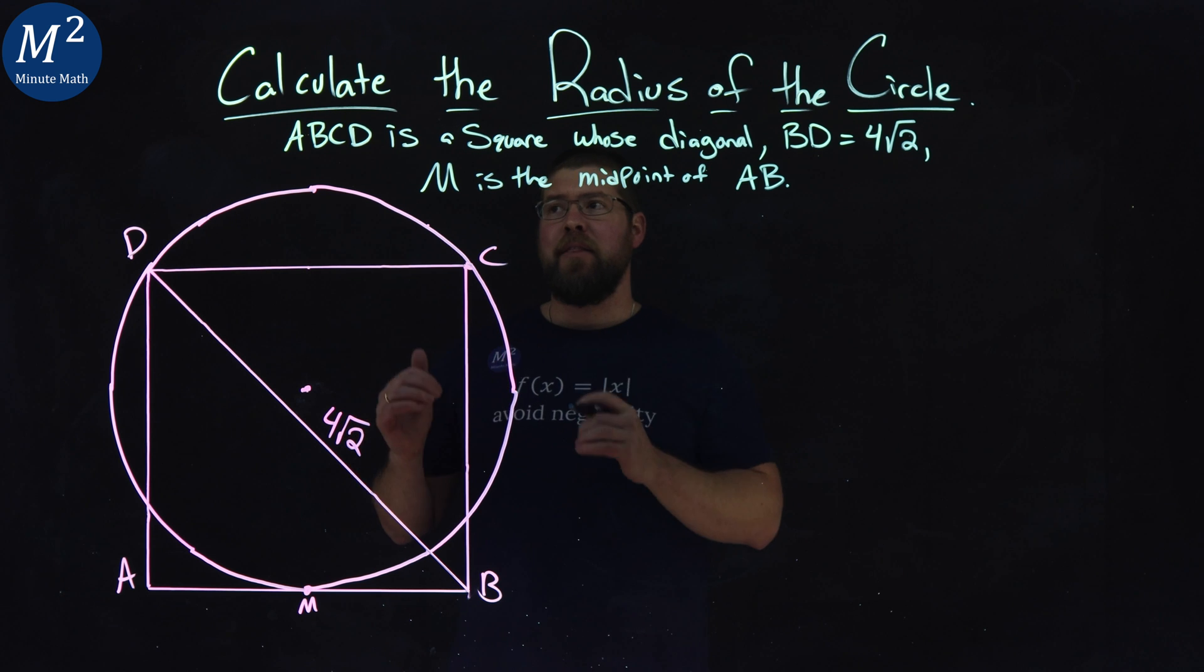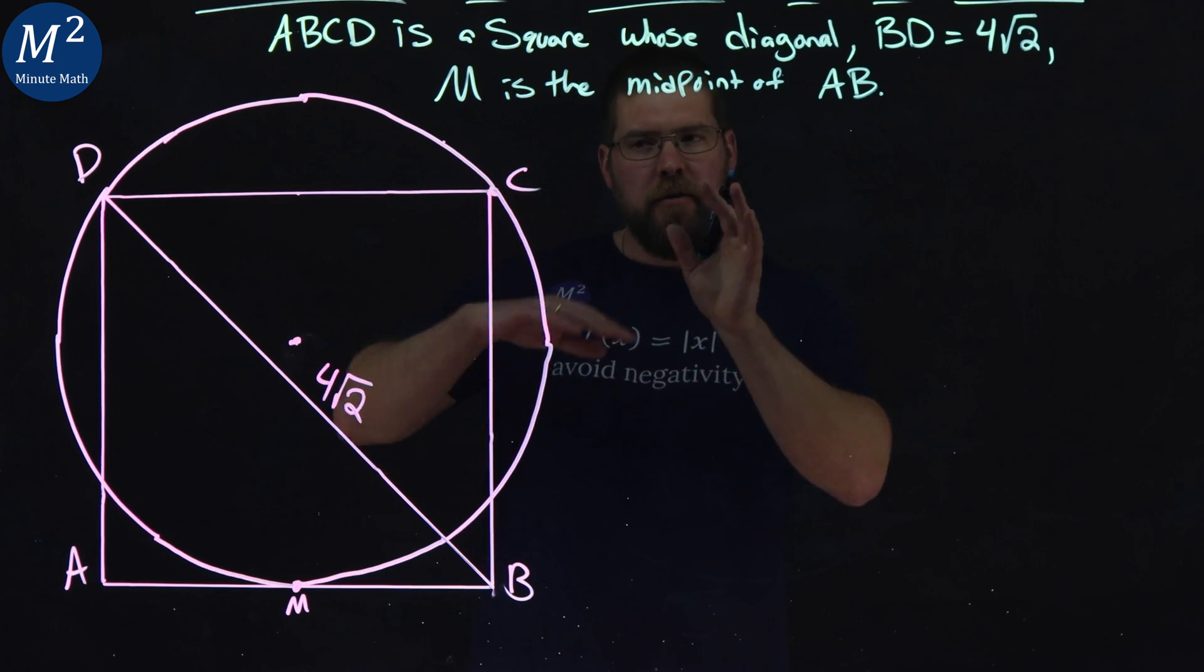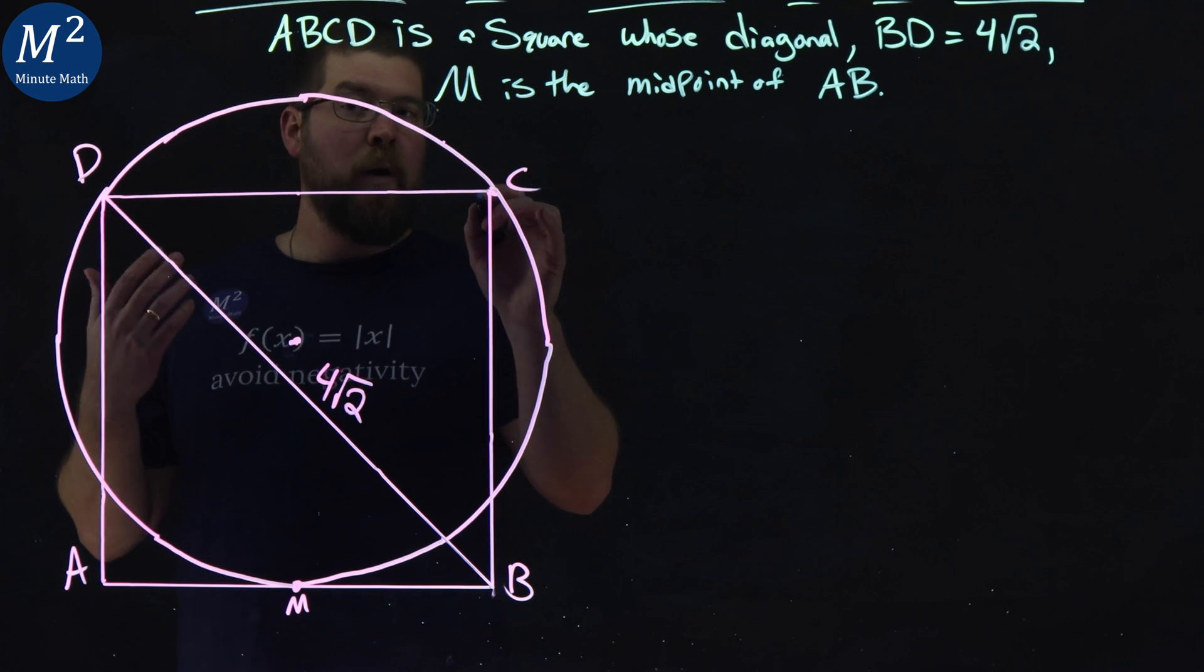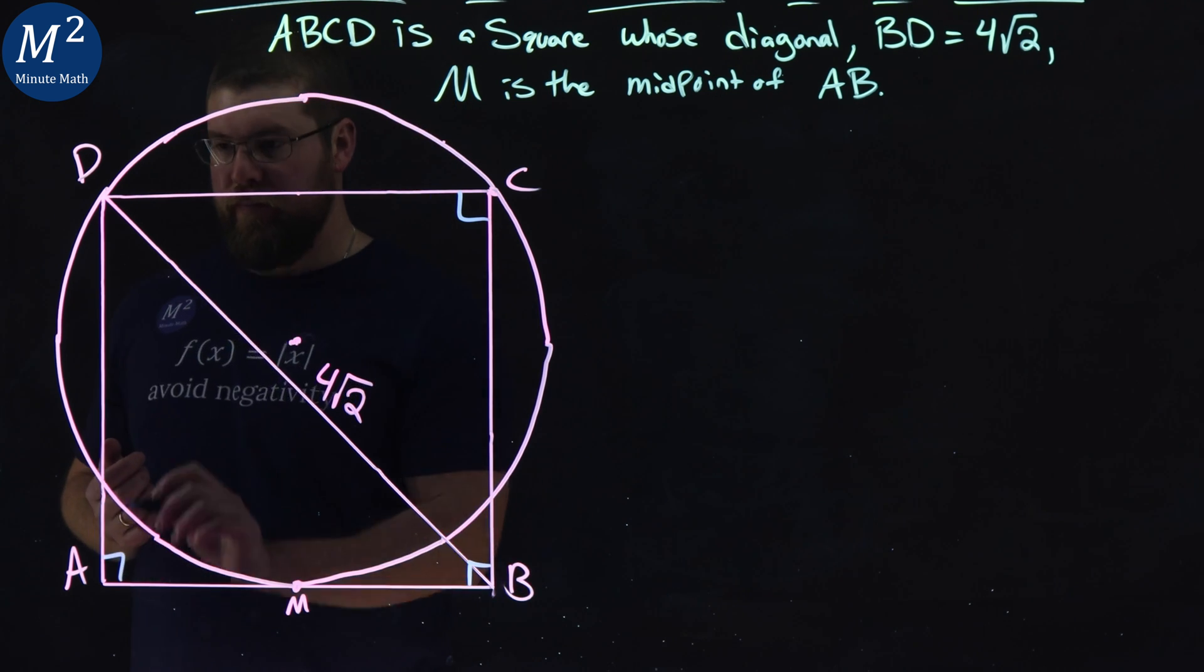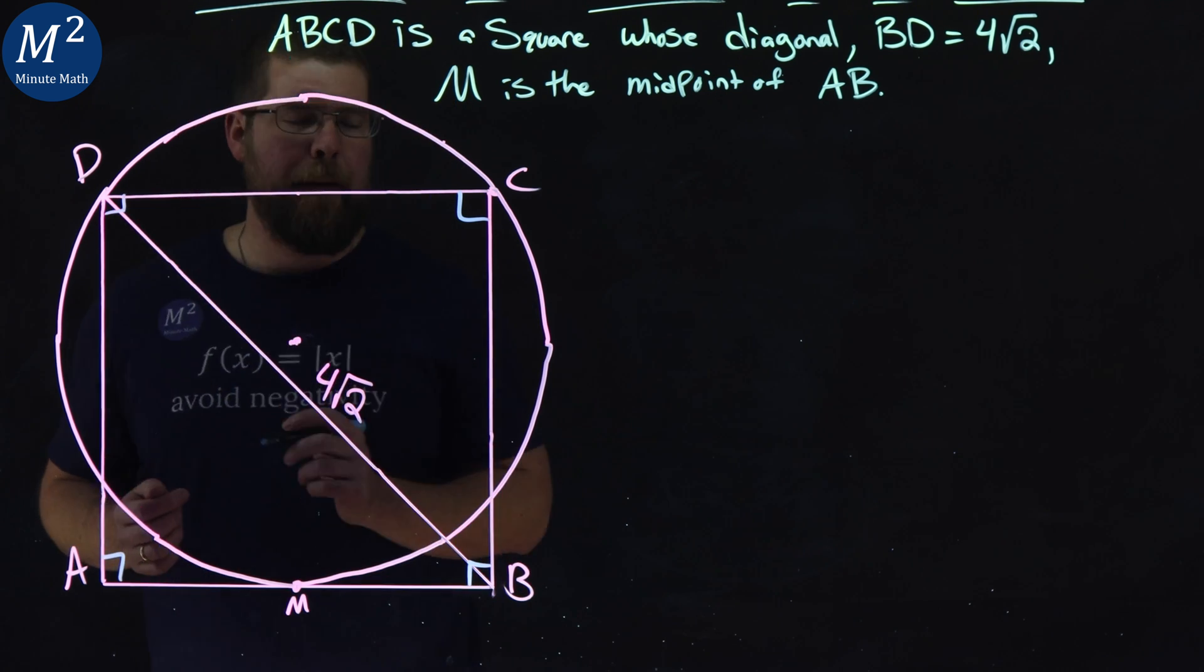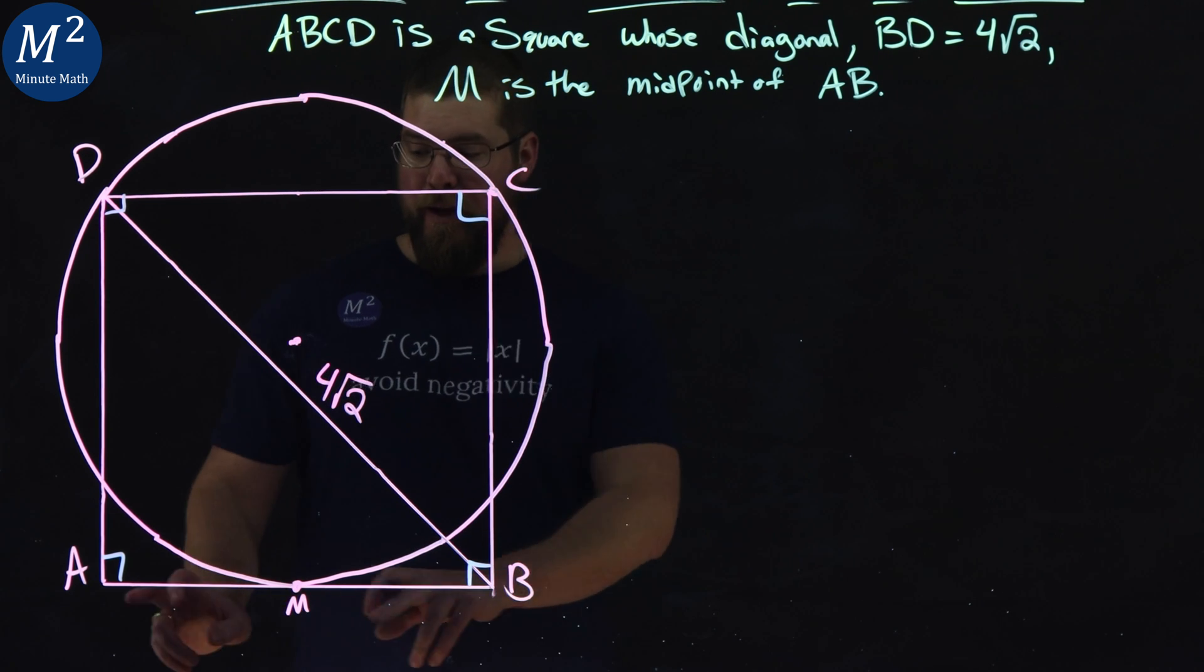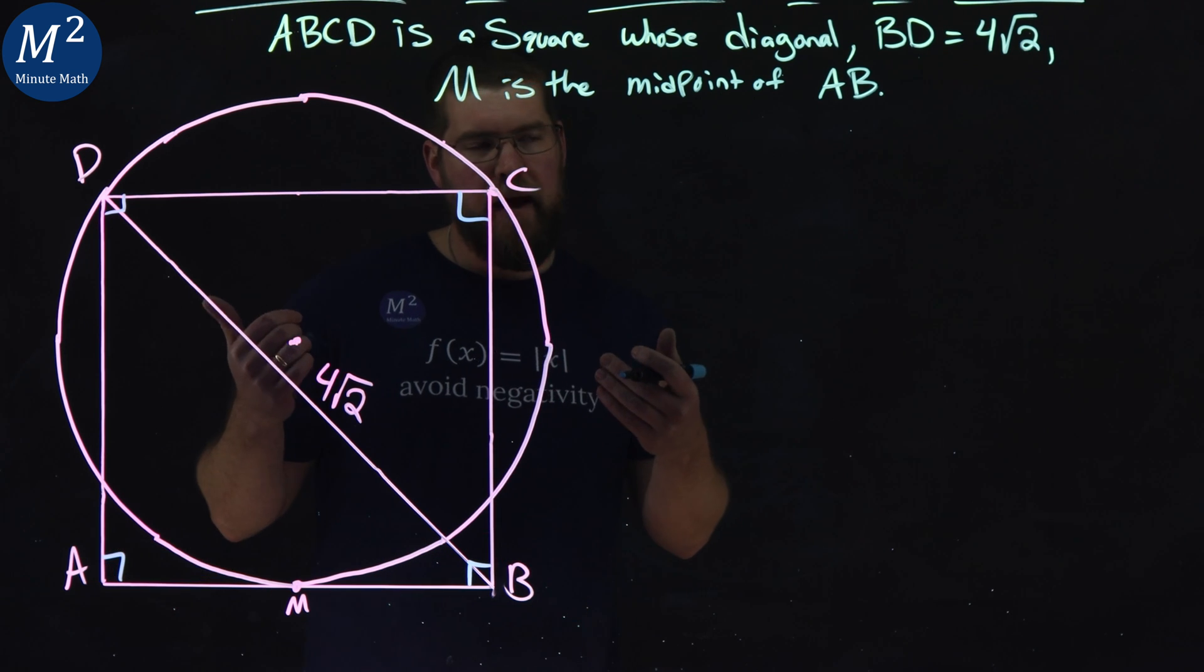What we want to do again is find the radius of the circle. Now, a few clues here. Let's fill in what we know. Since ABCD is a square, we know we got some right angles going on here. They say AB has midpoint M, meaning these two lengths are going to be congruent. So you can find the overall length of AB and we can break that in half.